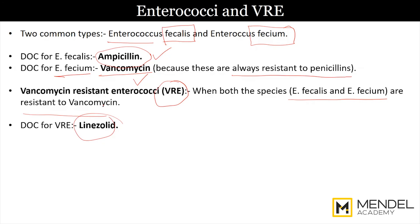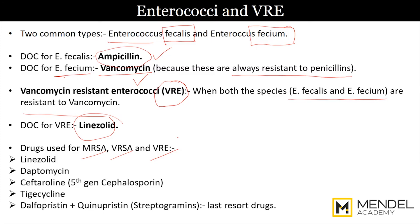Some doctors prefer other drugs, so you need to know the alternatives used to treat MRSA, vancomycin-resistant Staphylococcus aureus, and vancomycin-resistant enterococci. The list includes: linezolid, daptomycin, ceftaroline (a fifth-generation cephalosporin), tigecycline, and finally the streptogramins — specifically the combination of dalfopristin plus quinupristin. These are synergistic drugs that must be given together to act properly in cases of MRSA, VRSA, or VRE.